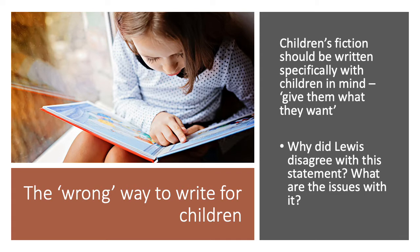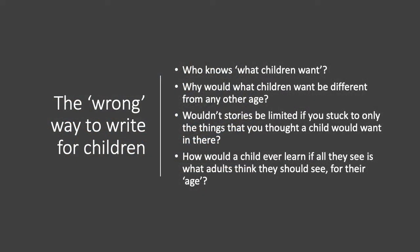Some of the reasons that C.S. Lewis may have felt this was the wrong way to write for children are as follows. First, if you are saying you're writing to give children what they want, who are you to say you know what children want? How do you know what all children in the world want from a story? Secondly, why would what children want be any different from any other age? Why distinguish what a child wants from a book versus what a teenager, a middle-aged person, or an old person might want? Thirdly, stories would be limited if you stuck to only things you thought a child would want — everything else would be edited out. And finally, how would a child ever learn if all they see is what adults think they should see for their age?